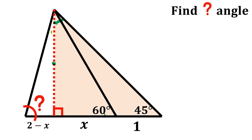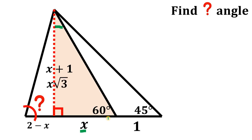This is simply equivalent to a 45-45-90 right triangle, so these two sides are the same. Since the length of this is x plus 1, the length of this perpendicular segment — the red segment — is simply equal to x plus 1 also. But given this 30-60-90 right triangle, this side is x, so the segment opposite the 60 degrees is simply equivalent to x times the square root of 3.